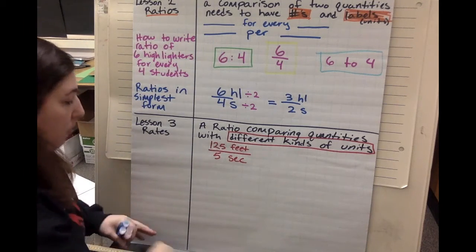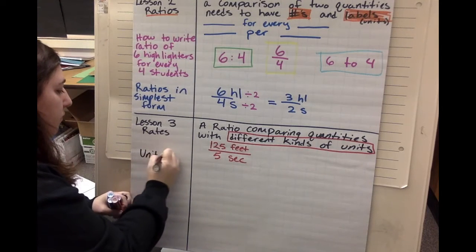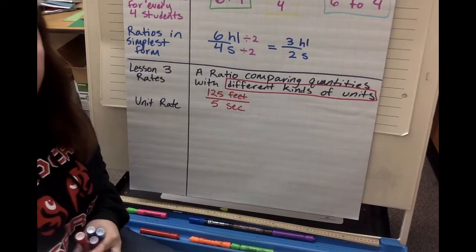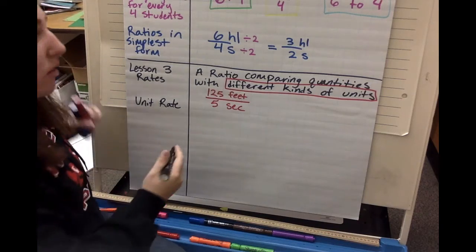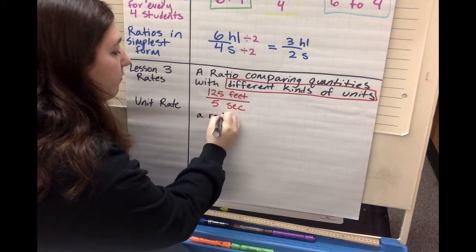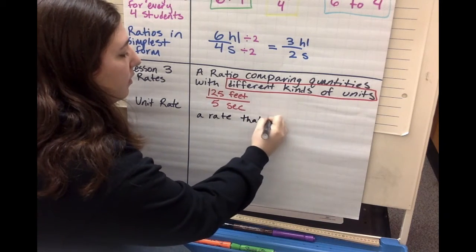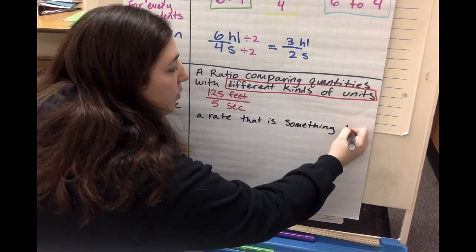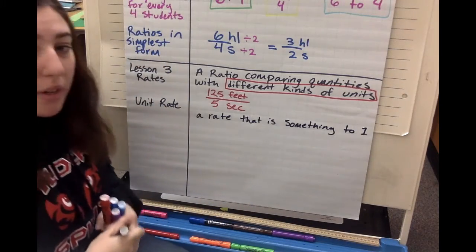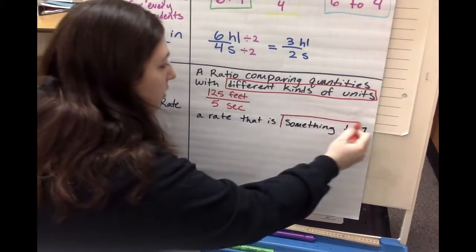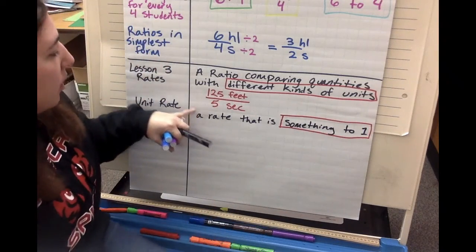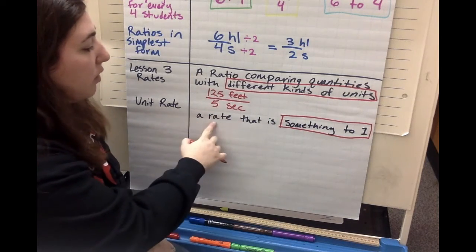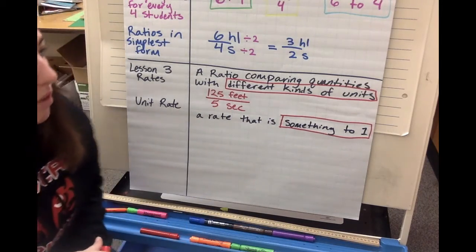Let's talk about a unit rate. A unit rate is a rate that is something to one. The important part is the 'something to one.' We know a rate has different kinds of units; a unit rate is that same thing but with a denominator of one. Let's do an example of how to find unit rates.